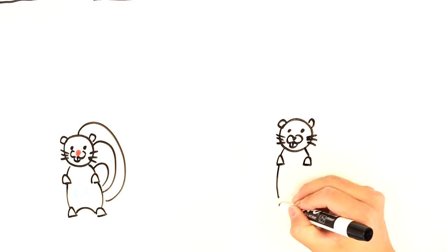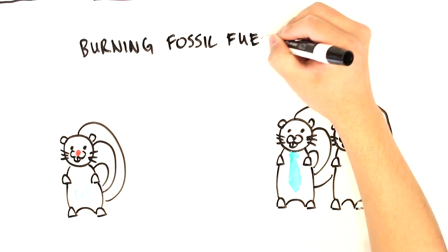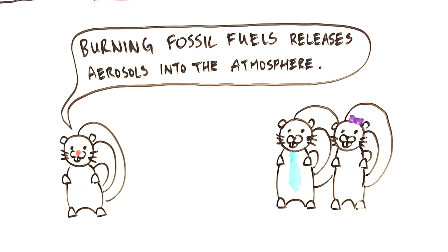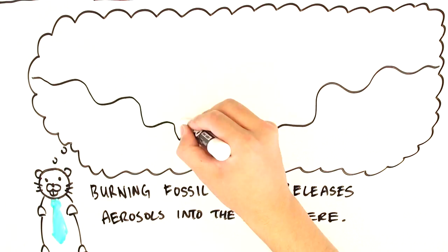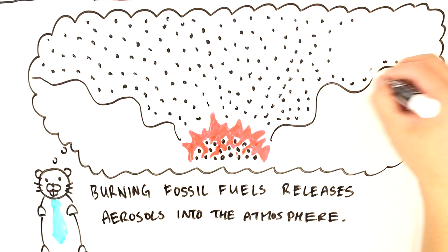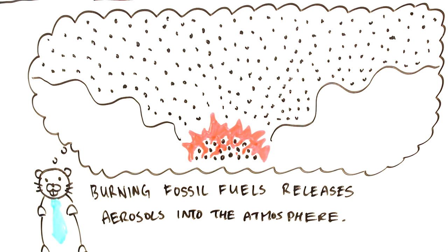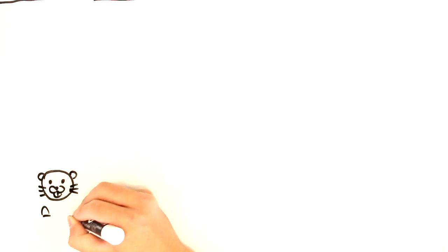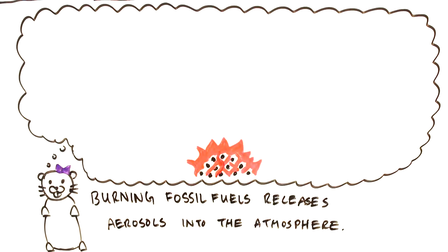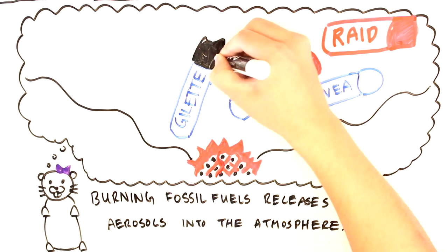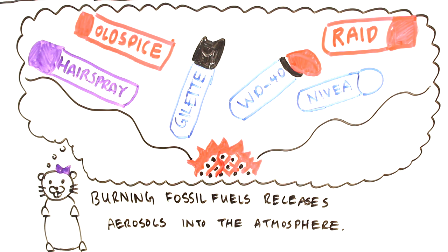Next, GrammarSquirrel explains that burning fossil fuels releases aerosols into the atmosphere. One of her friends has specialist knowledge in this subject area, and pictures the correct image. But her other friend took aerosols to mean something very different, and she is consequently very confused.